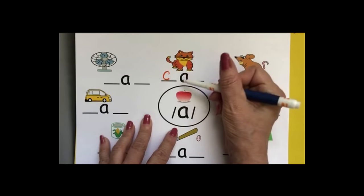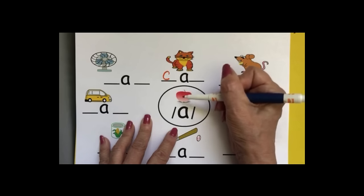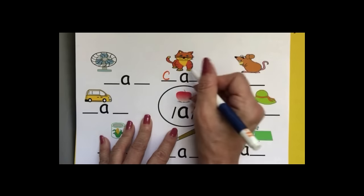A, and if they don't remember what the short A sound makes, they can look at apple, a, and cat.